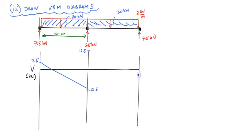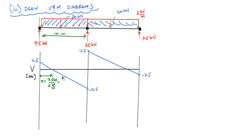Where the shear diagram crosses zero is an important point — it's a local maximum in the moment diagram. Starting at 7.5 kN and decreasing at a rate of 2 kN per meter, the zero crossing occurs at x equals 7.5 divided by 2, which is 3.75 meters. By symmetry, the zero crossing on the other side is also at 3.75 meters from C.